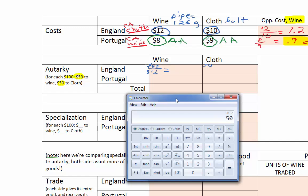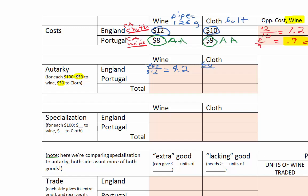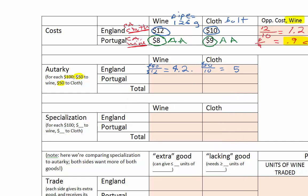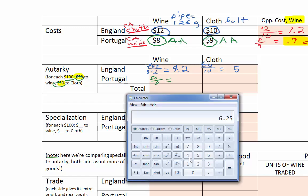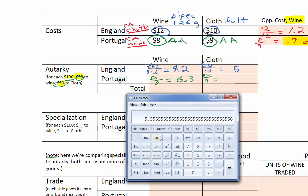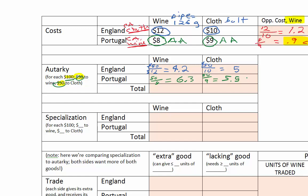Using a calculator: 50 divided by 12 is 4.16, rounded to 4.2 pipes of wine. For cloth, England has the other $50 and it costs $10 per unit — 50 divided by 10 is 5 bolts of cloth. Now Portugal: $50 to wine at $8 per pipe gives 50 divided by 8 = 6.25, rounded to 6.3 pipes. And $50 to cloth at $9 per unit gives 50 divided by 9 = 5.55, rounded to 5.5 bolts.